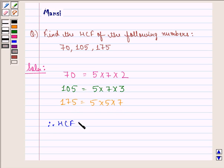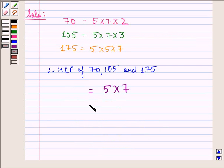Therefore HCF of 70, 105 and 175 is 5 into 7 that is equal to 35 and this is our answer to this question.